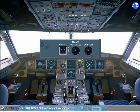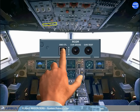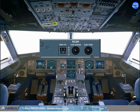The RCDR panel is installed on the overhead panel. During the cockpit preparation, the ground control push button can be switched on in order to start the DFDR and the CVR recording prior to engine start.